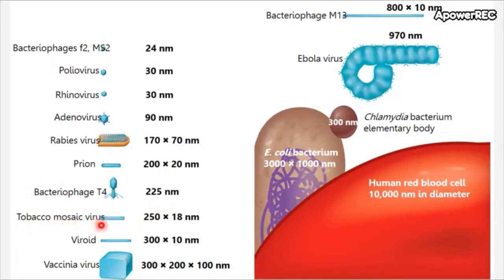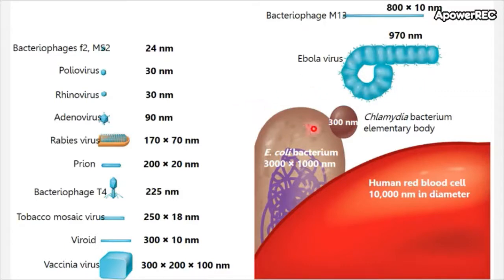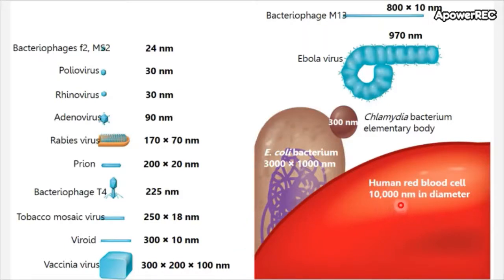Here we have the T4 bacteriophage at about 225 nanometers, tobacco mosaic virus which is a plant virus, viroids as discussed, vaccinia virus which infects mammalian cells, another bacteriophage at 800 by 10 nanometers, and an Ebola virus at 970 nanometers. For reference, Chlamydia bacterium are very small at about 300 nanometers, a typical E. coli cell is one micrometer by three micrometers, and the eukaryotic human red blood cell is about 10 micrometers in diameter.